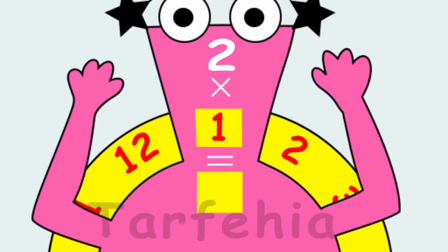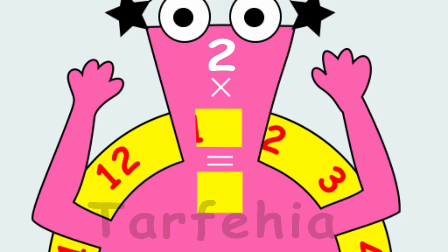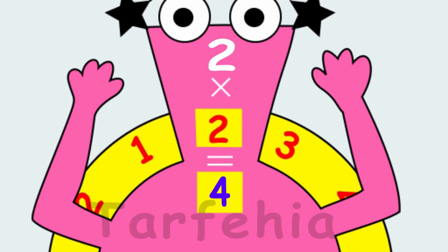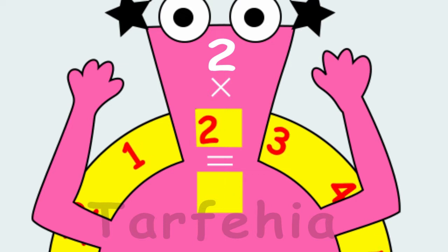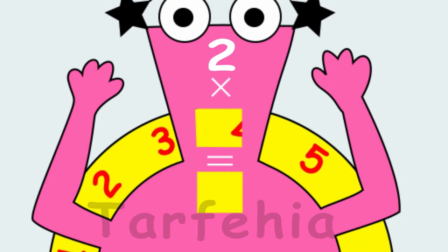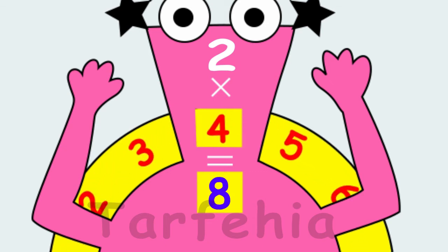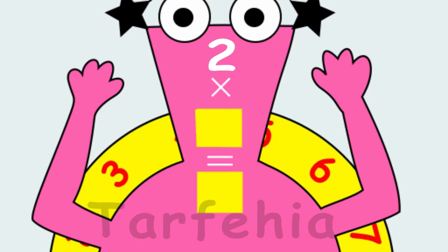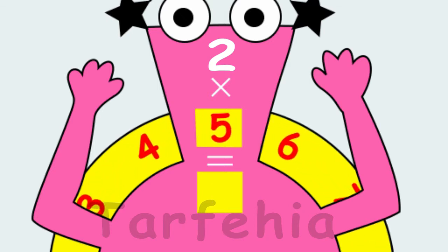2 times 1 equals 2. 2 times 2 equals 4. 2 times 3 equals 6. 2 times 4 equals 8. 2 times 5 equals 10.